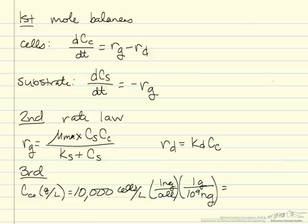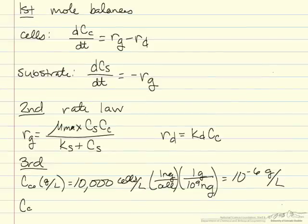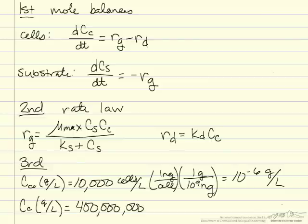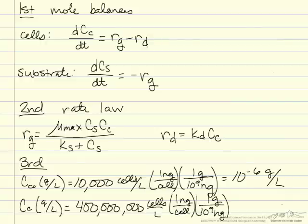The final concentration of our desired cells, also in grams per liter, will be 400 million cells per liter times 1 nanogram per cell and 1 gram per 10 to the 9th nanograms. So we want to get to 0.4 grams per liter of cells.